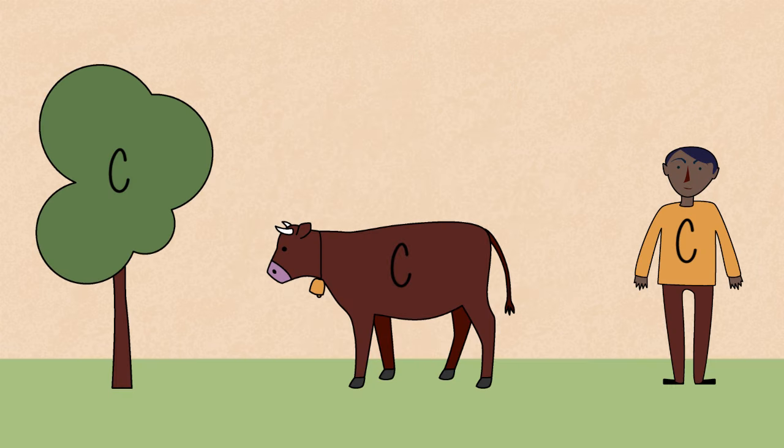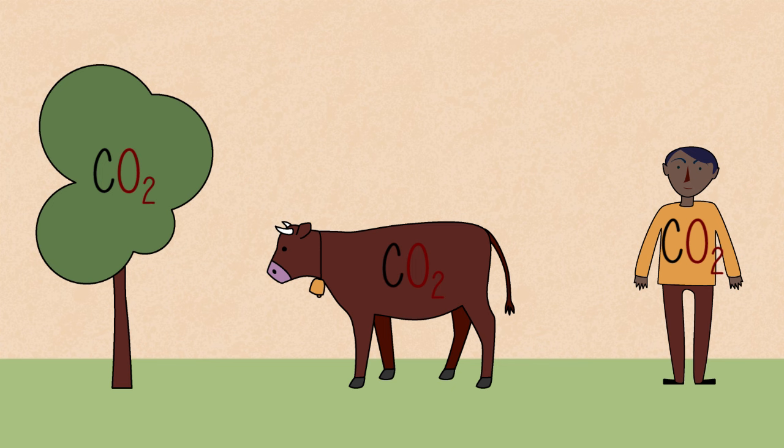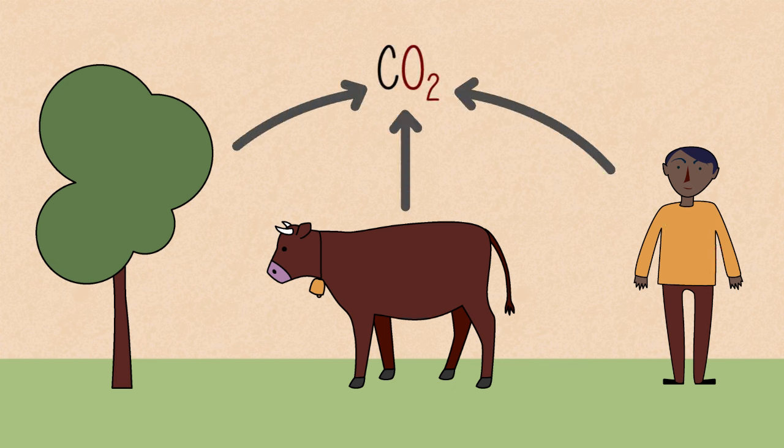In order to fuel these living processes, plants and animals take back oxygen from the air, and rejoin it with the carbon, releasing carbon dioxide back into the environment. Do you know the name of this energy releasing process?